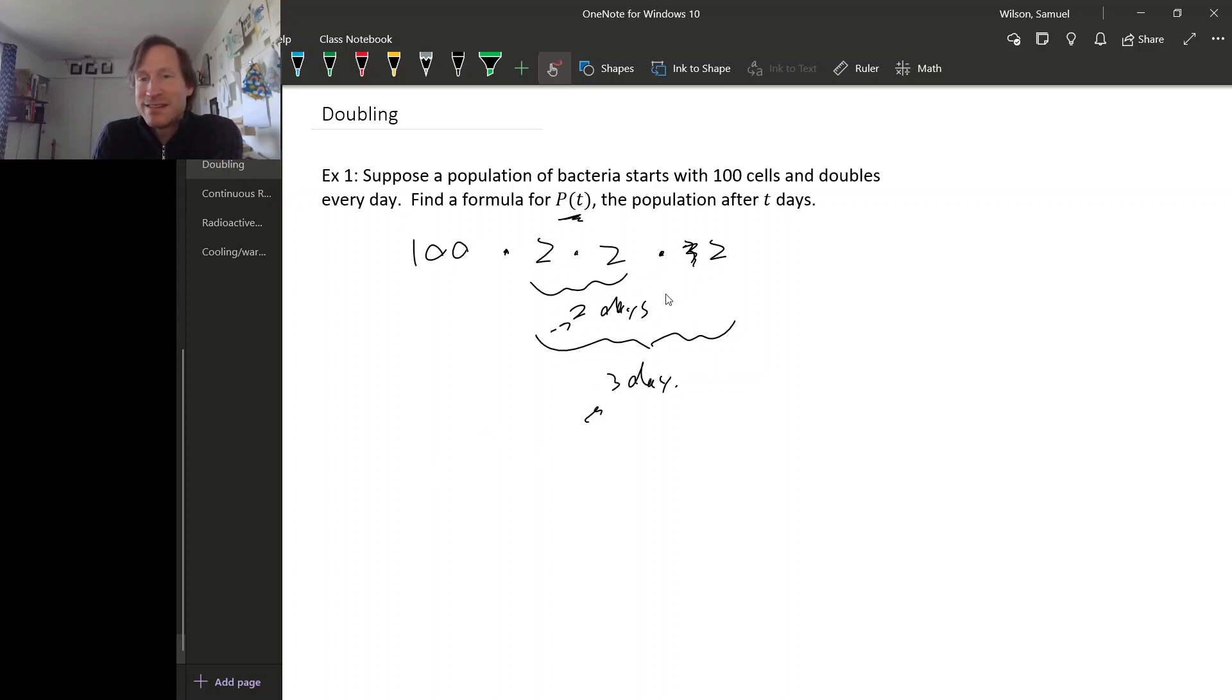So if we wait t days we will multiply by two t times, and that means we're going to have 100 times 2 to the t. If we have something that's doubling every once in a while, it's 2 to the exponent, and the exponent here is the number of times we double. Now in this particular example, since we're doubling every day, the number of days and the number of times we double is the same thing, but that's not always the case.